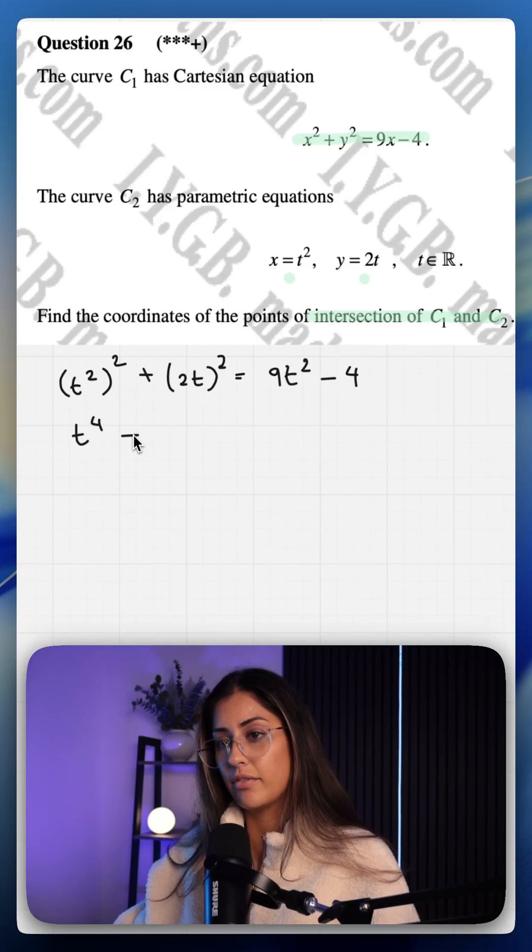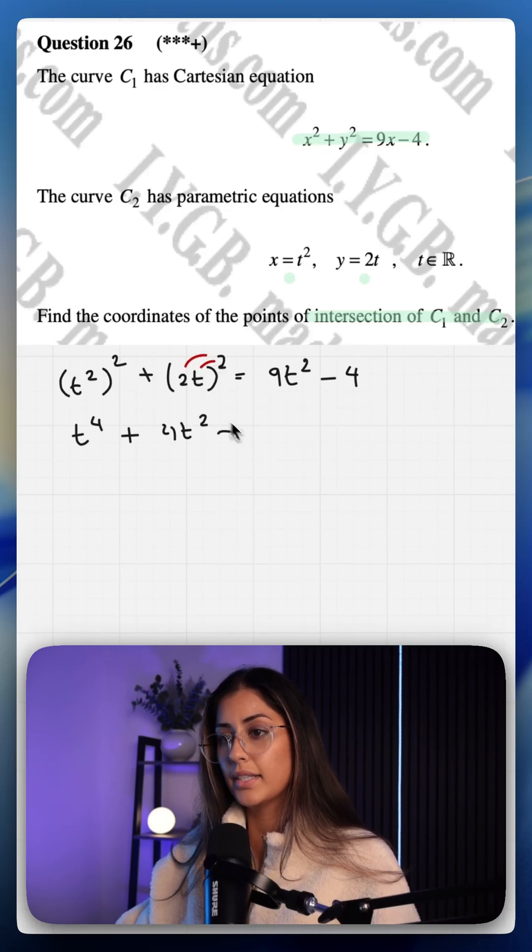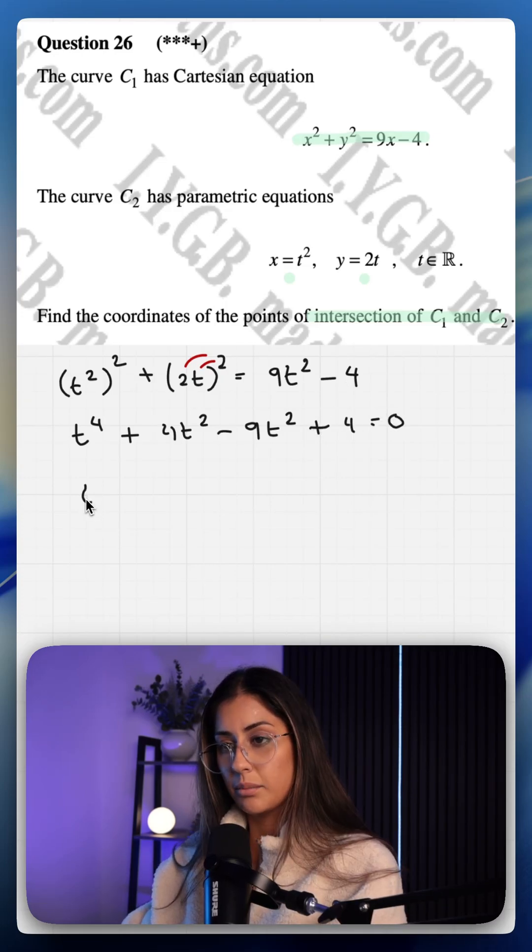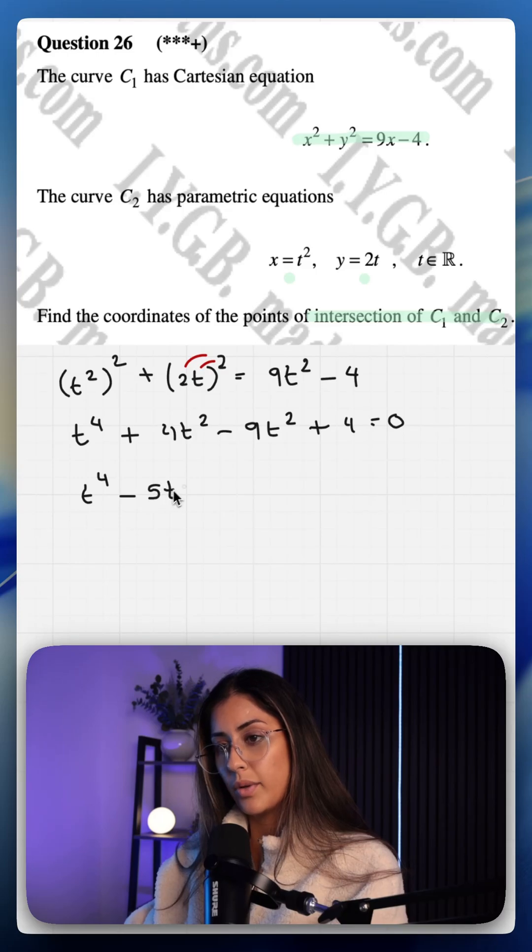That gives us t to the power of 4 plus 4t squared. We are expanding this minus 9t squared, I'm going to bring it over plus 4 equals 0. That simplifies to plus 4 minus 9 which is minus 5t squared plus 4 equals 0.